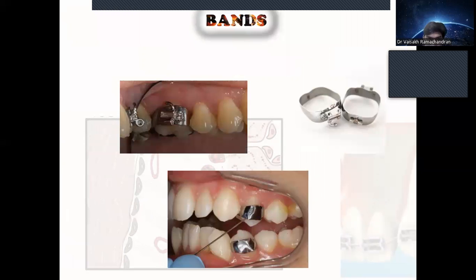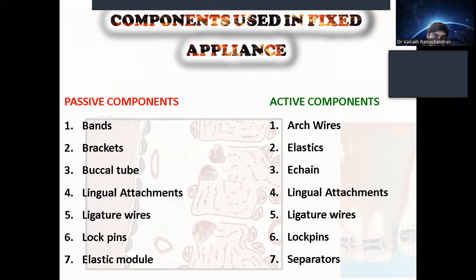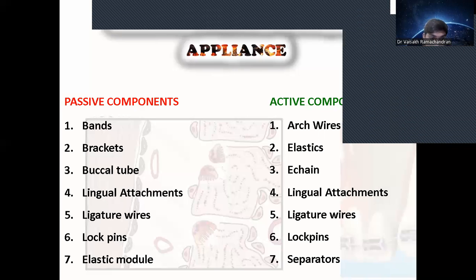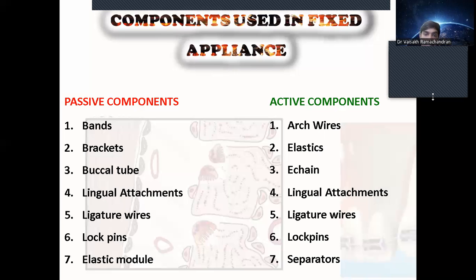Examples of passive components include bands, brackets, buccal tubes, lingual attachments, ligature wire, lock pins, and elastic modules. Active components include arch wires, elastics, and lingual arch wires.